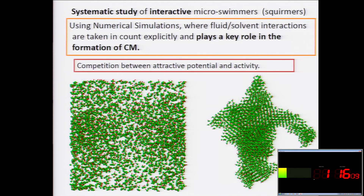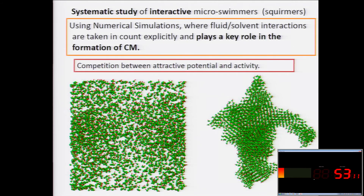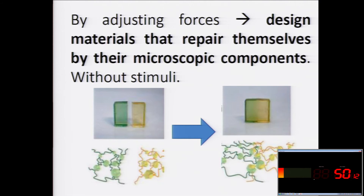On the left part, you have particles that move in the same direction — the red arrows pointing more or less in the same direction. With some parameters, if you move the parameters, you will also have that suspension forming like a gel, like an active gel. So you have different kinds of systems. The take-home message is that tuning these forces, it might be possible to design new materials that are repaired by themselves by the microscopic components without a stimulus.